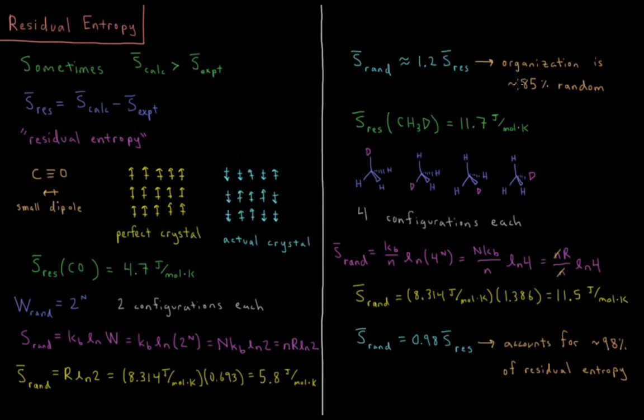But for the most part the dipole is so small that about 80-85% of them organize themselves randomly. But this type of a simple model for what this residual entropy is does a pretty good job of predicting why there's this discrepancy between statistical mechanics, which just calculates the absolute value of entropy, and our experimental calorimetry result, which assumed that the entropy at 0 Kelvin was 0.